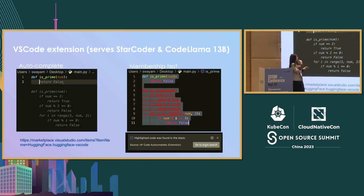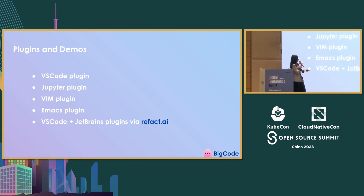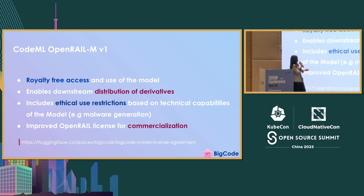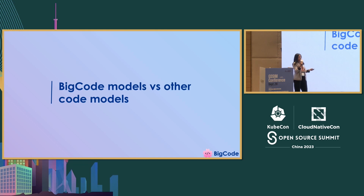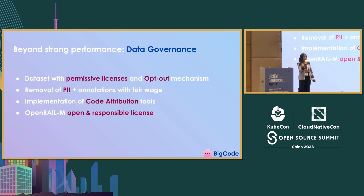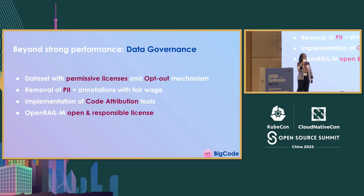We have some code completion tools like the VS Code extension, an Emacs plug-in, a Vim plug-in, and a JetBrains plug-in — they all use StarCoder. We also have a license for the model which allows commercial use, free derivatives, and is royalty-free. The only restrictions are ethical — unless you're planning to use the model for malware generation or harmful cases, you should be good to use it. Why would you use StarCoder? We think the BigCode models are strong but also very responsibly developed. We only kept permissive licenses in the training, we have an opt-out mechanism, we removed personal identifiable information from the training, made sure annotators were paid fairly, and developed code attribution tools.